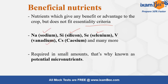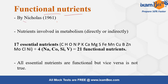Beneficial nutrients are required in very small amounts and are known as potential micronutrients. Broadly, nutrients are classified into two categories: macronutrients and micronutrients. These are called functional nutrients, a term first used by Nicholas in the year 1961. Functional nutrients include the 17 essential nutrients as well as four beneficial nutrients.